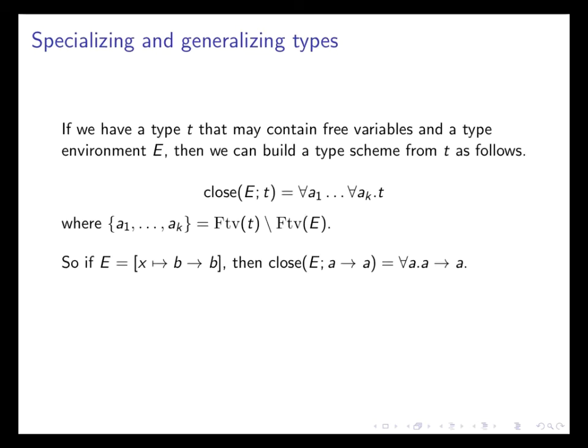If we have a type T that contains free type variables, and we have a type environment, then we can build a type scheme from it by adding the quantifiers. Essentially, what we're saying is that if some type variables are mentioned in T, but we don't say anything about what they are, we can say, well, this type holds for all types A. So we can close our type T with respect to all the type variables that have not been mentioned.